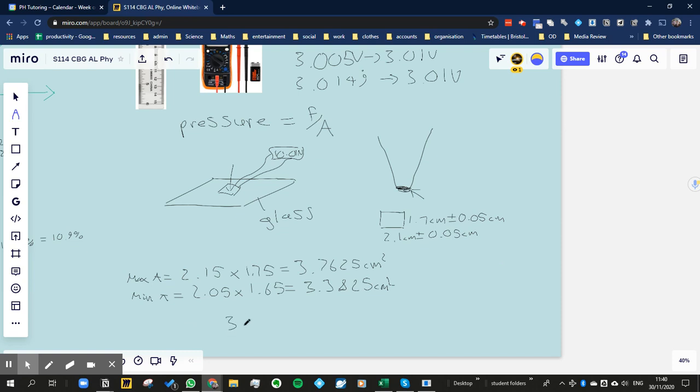So the halfway point is 3.5725. Then we're going to say, well, how much lower or higher is that than the bounds? Let's subtract the lower bound, so minus 3.3825. That's going to be then plus or minus 0.19. So the area is 3.5725 plus or minus 0.19 centimeters squared.